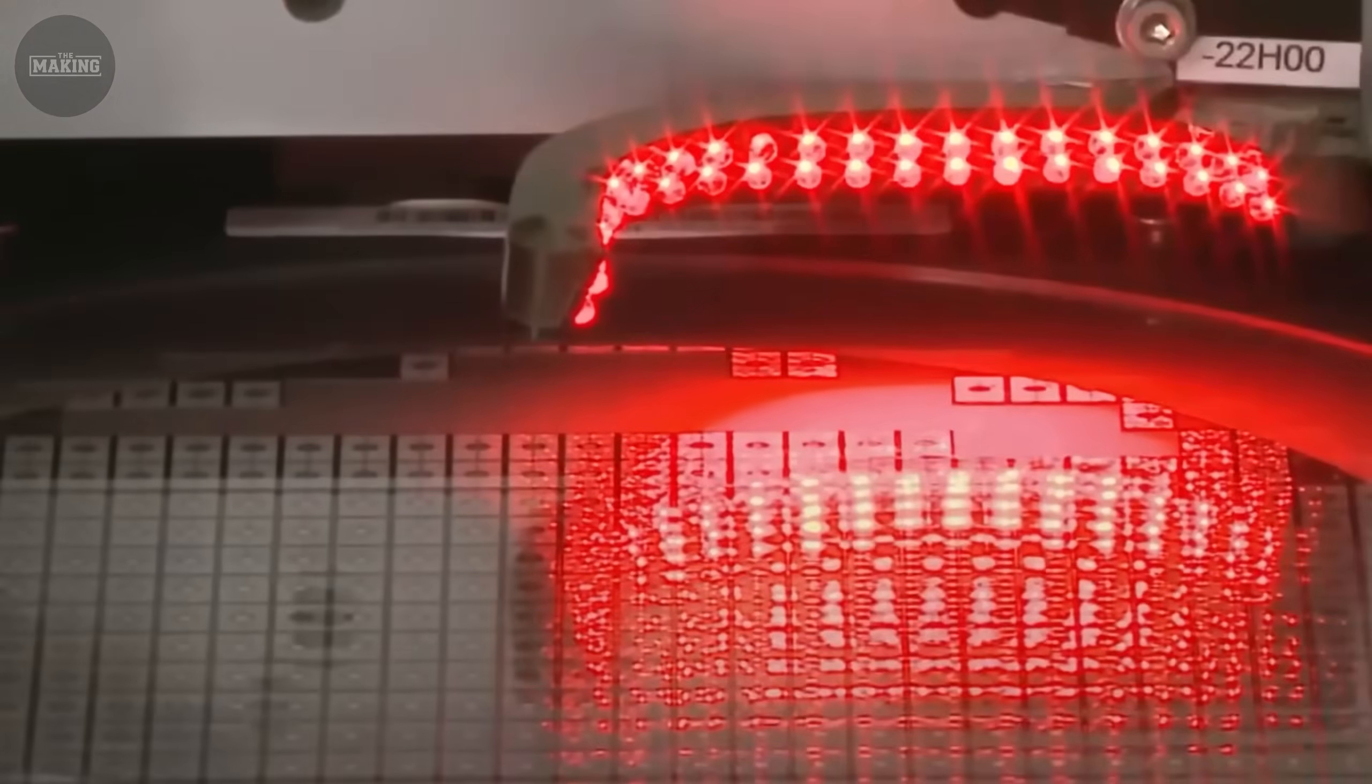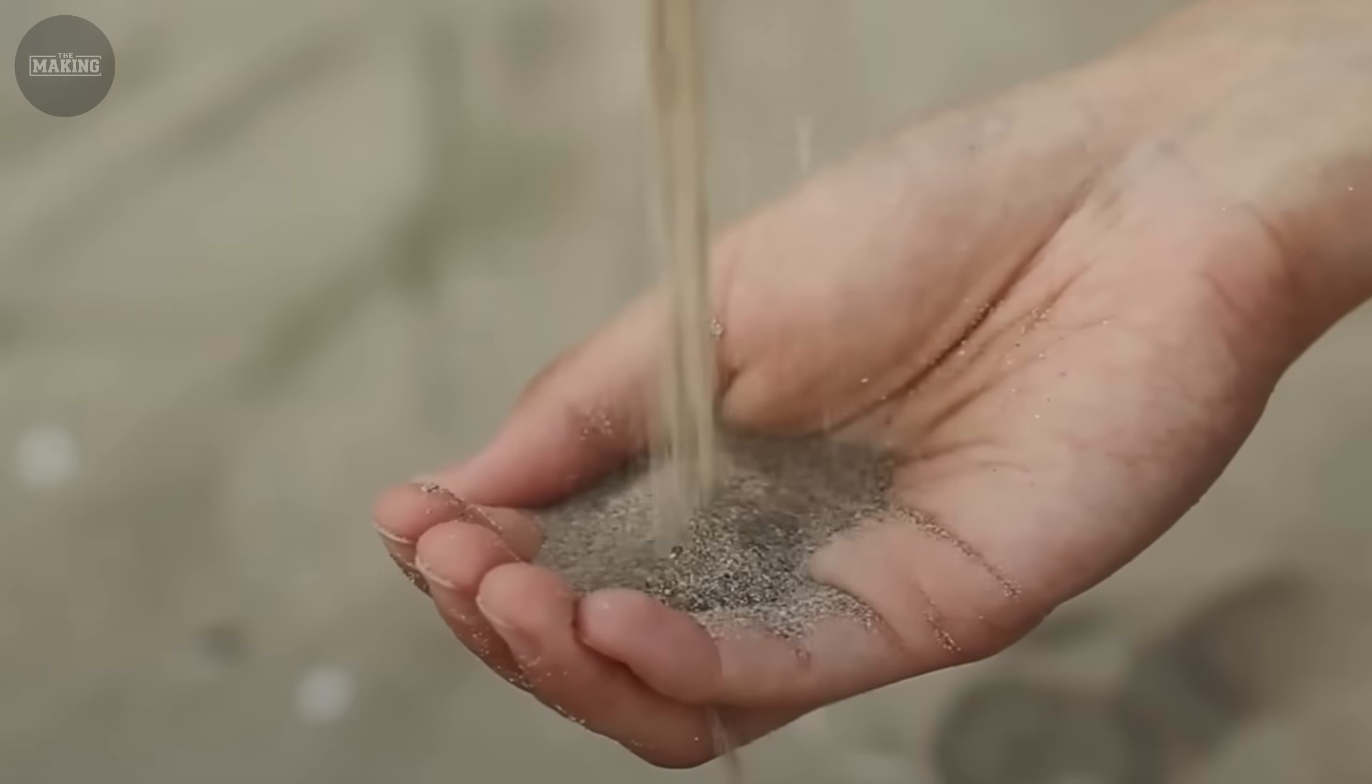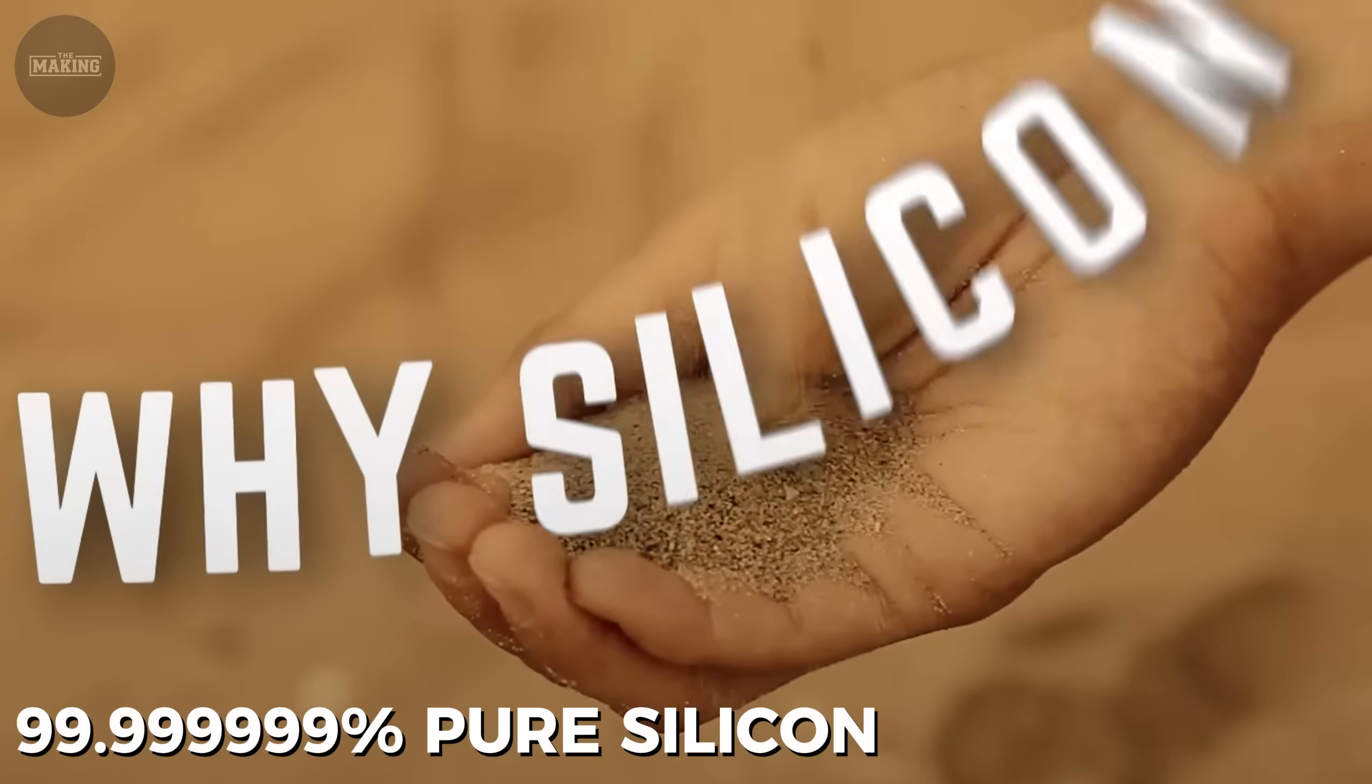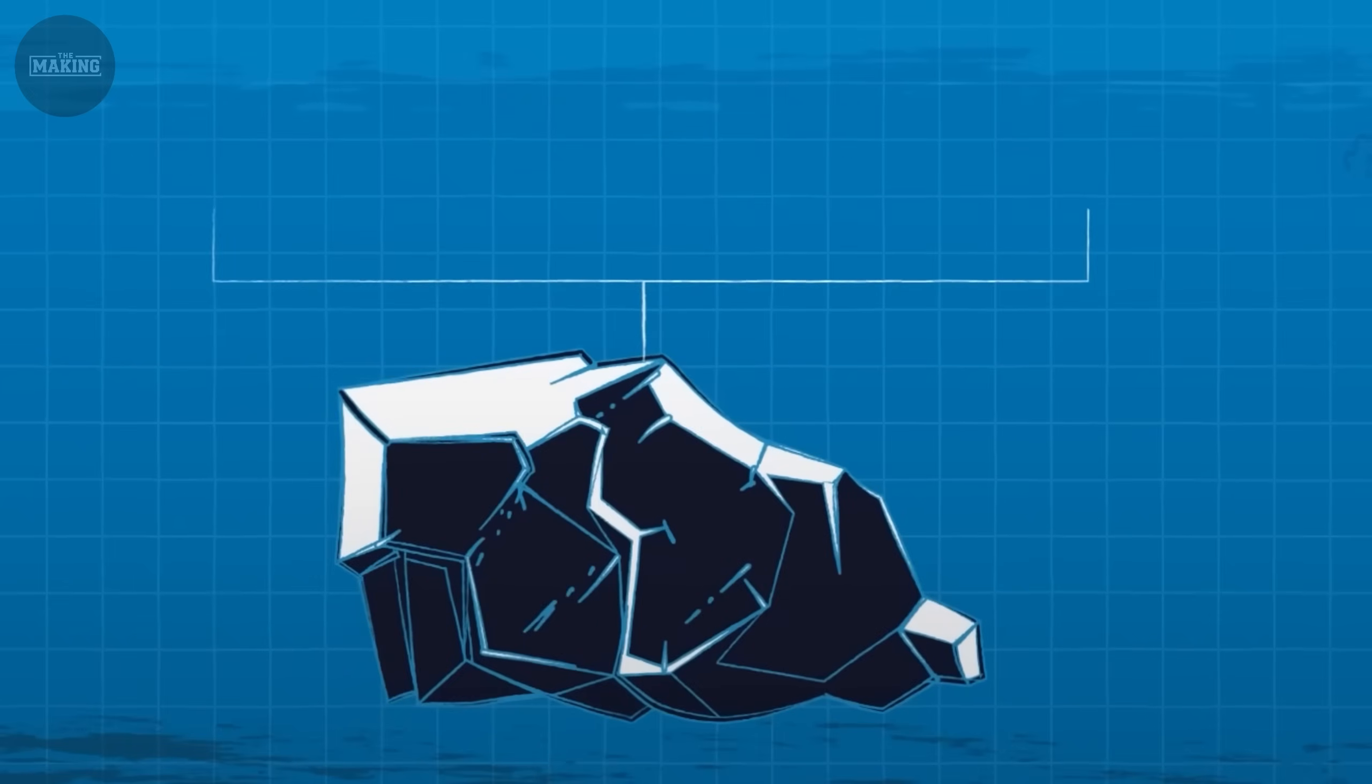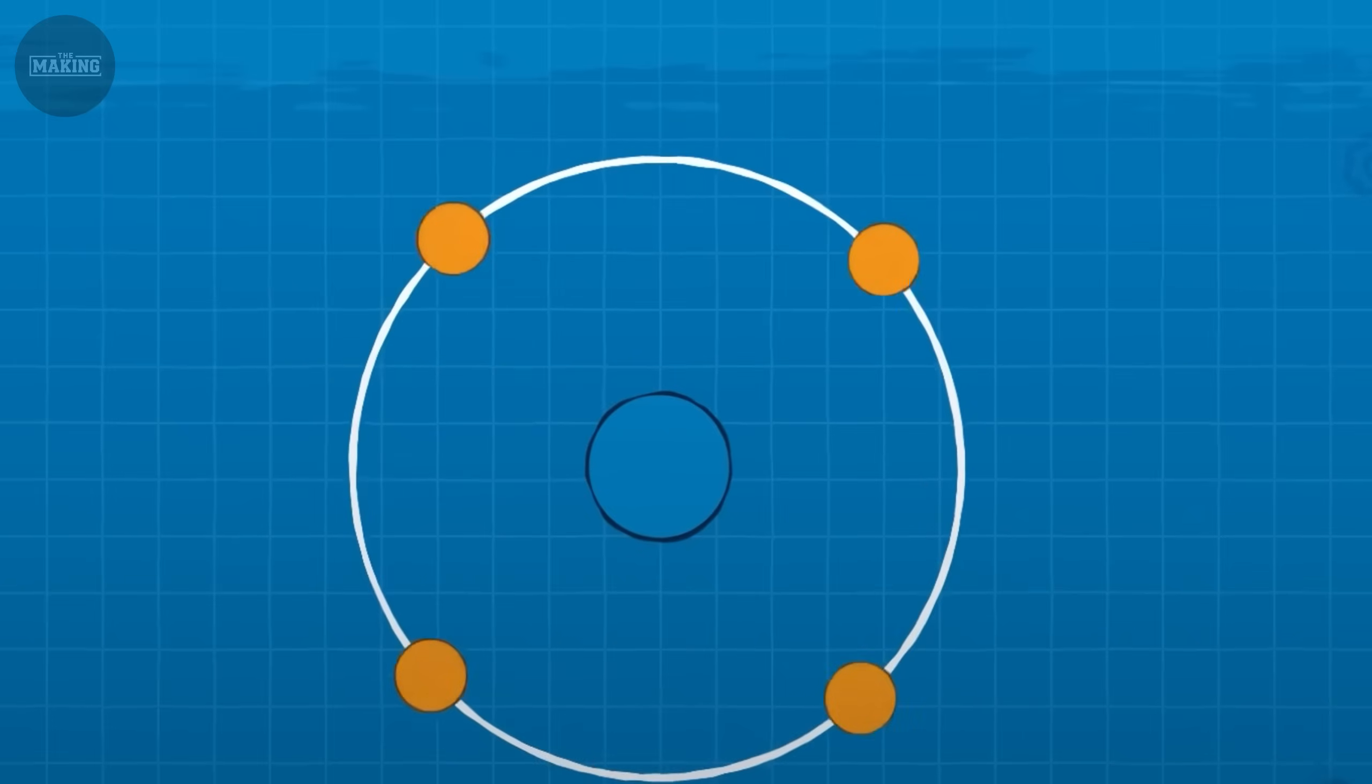Everything starts with silicon extracted from quartz sand. But not just any silicon will work. It must be 99.9999999% pure. That's just one impurity atom in every billion. Why so strict? Because a single contaminant can destroy a chip worth thousands of dollars.